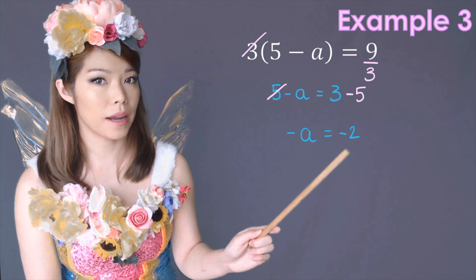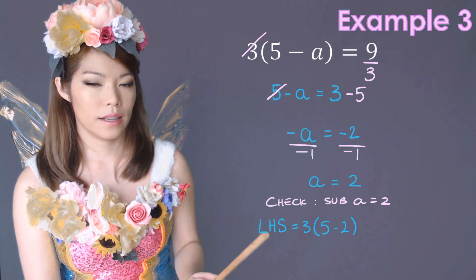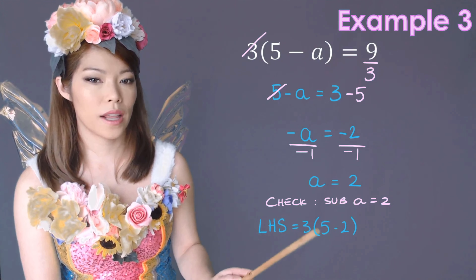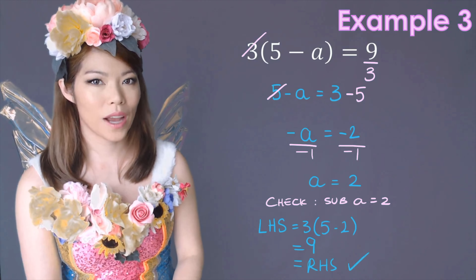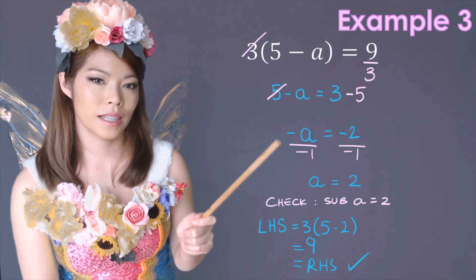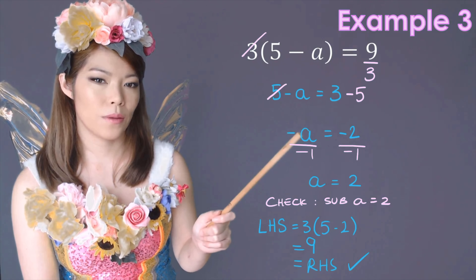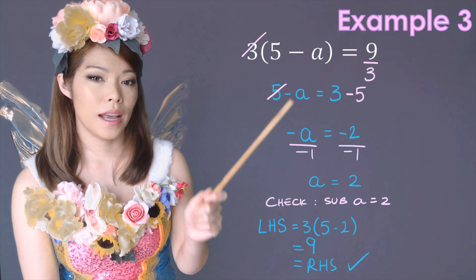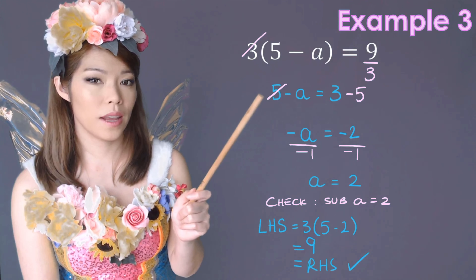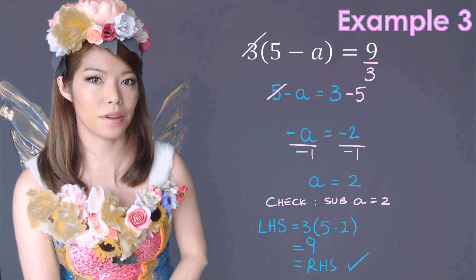To get rid of the minus on the left side, we multiply or divide both sides by negative 1. It doesn't matter which way you do it — negative negative cancels, giving x equals 2. For step number 2, substitute it back into the left side to check. We have 3 times 5 minus 2. 5 minus 2 is 3, and 3 times 3 is 9, which equals the right-hand side. So we are correct. Note that 5 minus x is the same as minus x plus 5, so it becomes minus 5 on the other side.